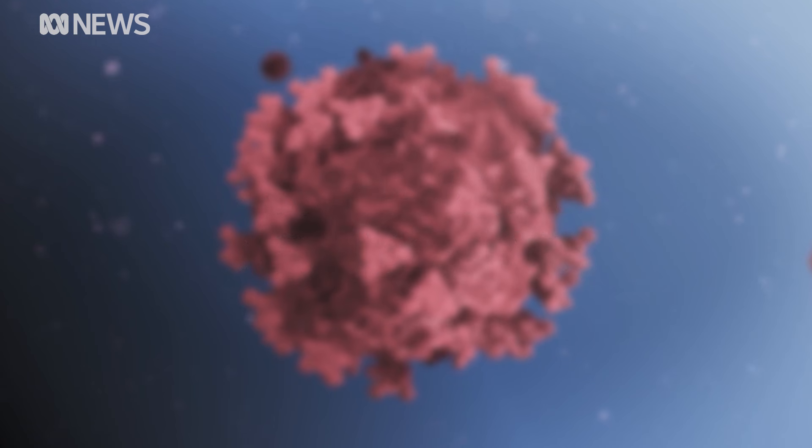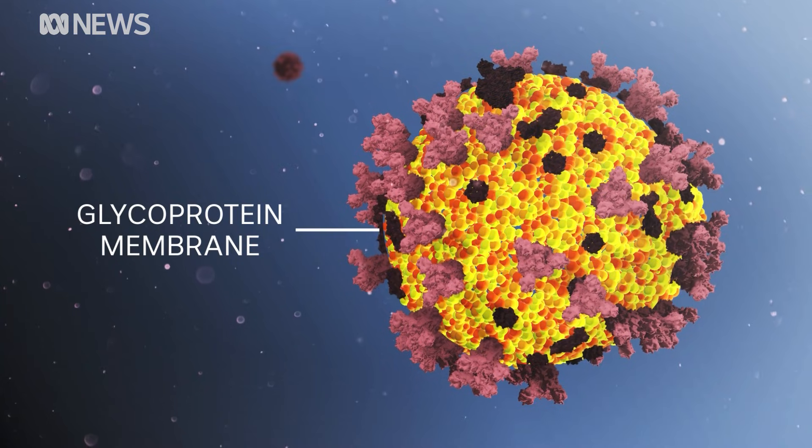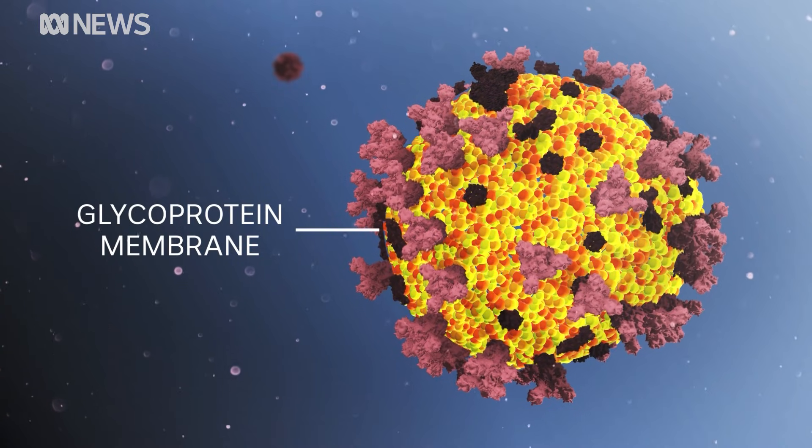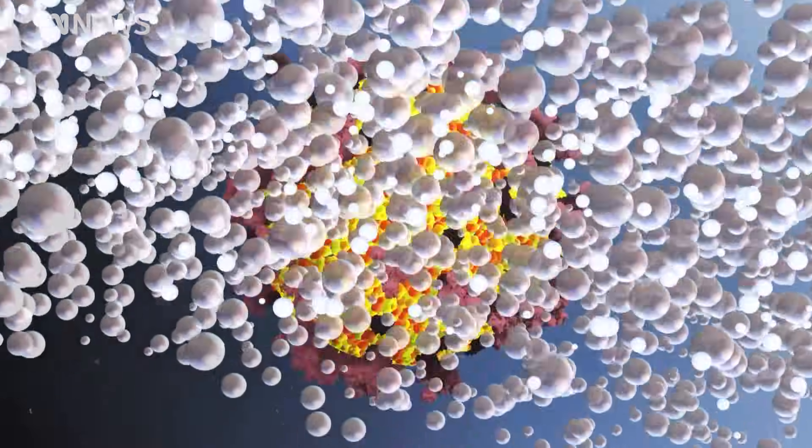The corona protrudes from the glycoprotein membrane, an envelope of lipid molecules that coat the virus cell's body. This fatty layer of skin is very delicate and it falls apart when it meets soap.